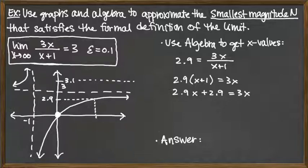I'm going to move all the x terms to the right hand side to keep everything positive. That leaves me with 2.9 is equal to 3x minus 2.9x, which would be 0.1x. Divide both sides by 0.1.